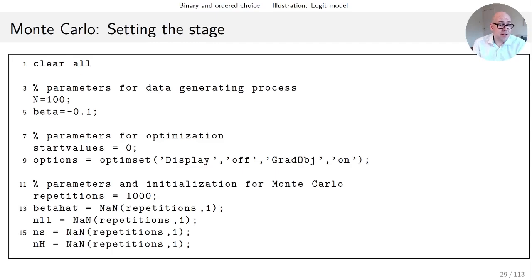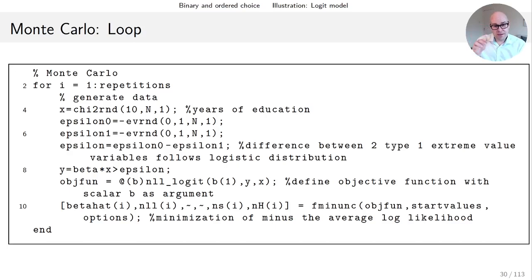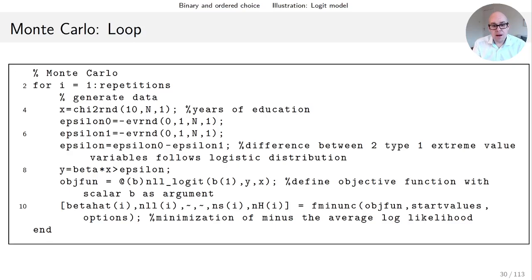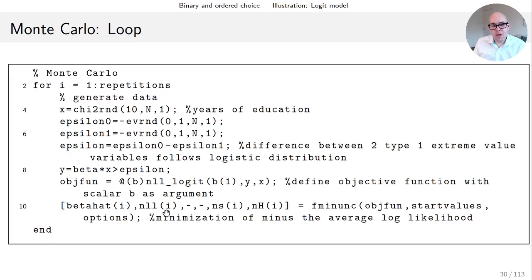Some of this will be done by you in a problem set, so you're going to follow up on this. Then I'm finally running the Monte Carlo by programming up a for loop, looping over i from one up to the number of replications, and each time doing all the data generation and estimation steps in lines four through ten.